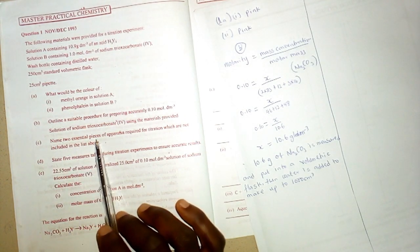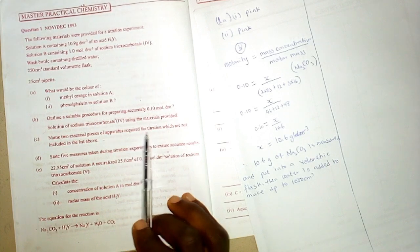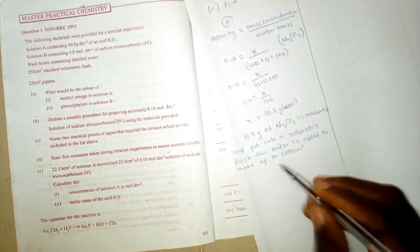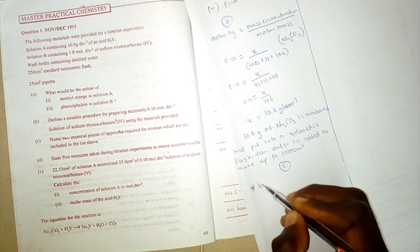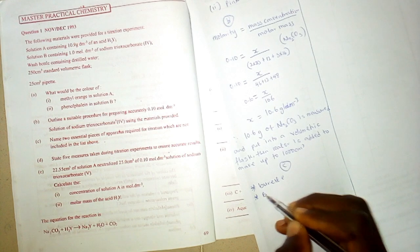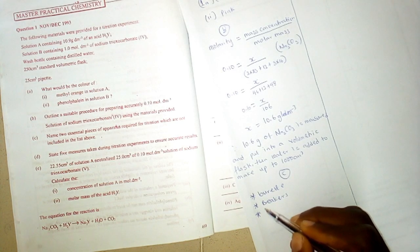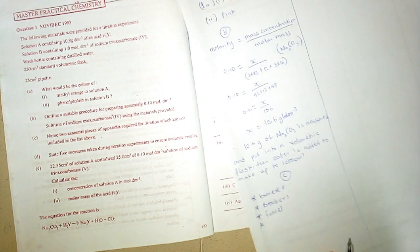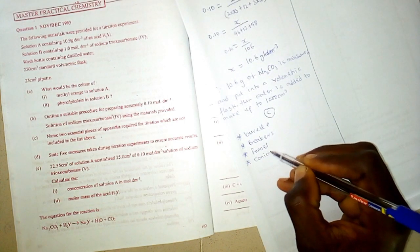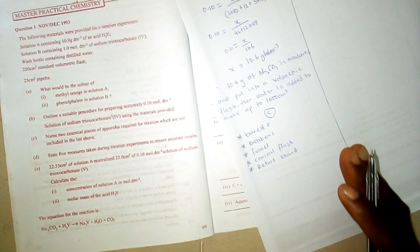Question (c): name two essential pieces of apparatus required for titration not included in the list. We have the pipette and volumetric flask listed, but missing are: burette, beakers, funnel, conical flask, and retort stand to hold the burette. These are essential materials that must be present to carry out titration as an experiment.